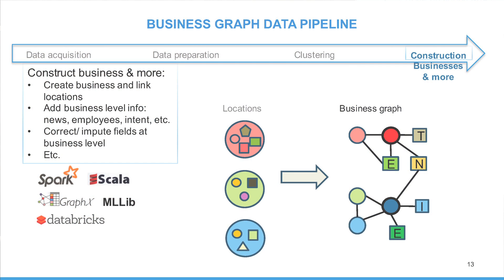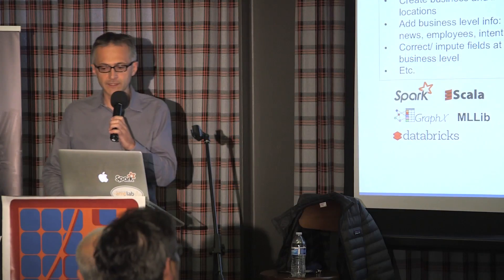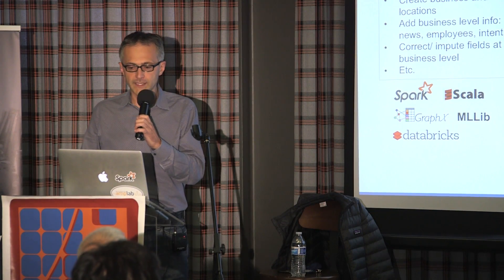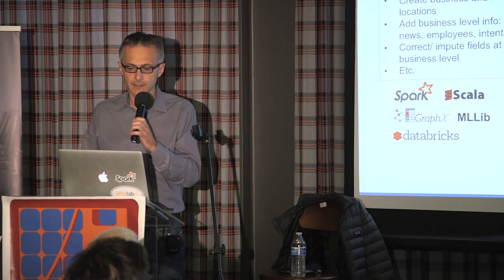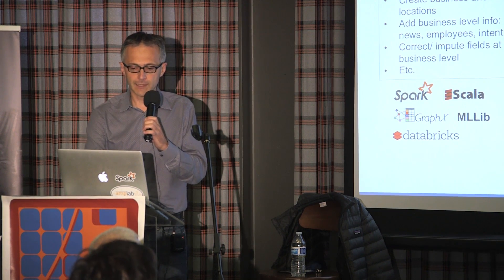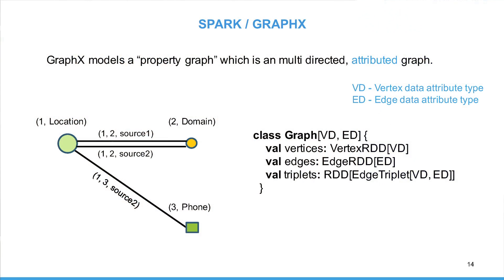The second sub-step is where we construct the business graph. Now we have a set of locations and we want to start grouping those locations together, and we also need to add additional top-up data such as news, employee, intent, and so forth. In a simple example, we see two businesses — red and dark blue — across three locations that share a news element. Before diving in, I'll briefly introduce GraphX, which we use for building our pipeline. Like Spark RDDs, GraphX is a property graph — it's immutable, distributed, and fault-tolerant.